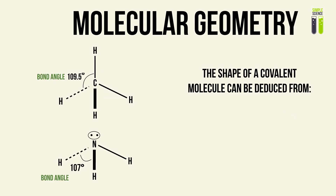With molecular geometry, we hope to form a 3D shape in which the atoms arrange around the central atom of a covalent molecule. The shape of a covalent molecule can be deduced from two things.